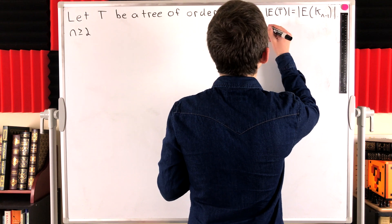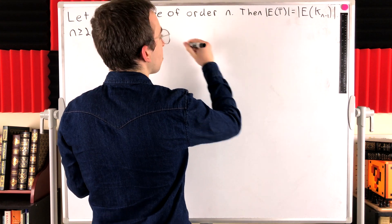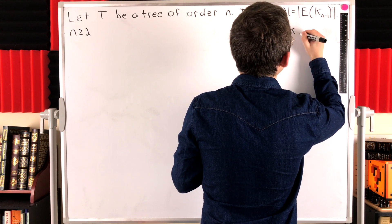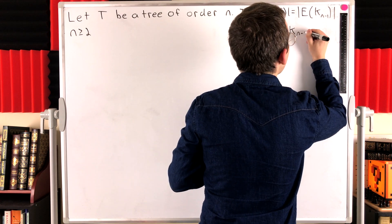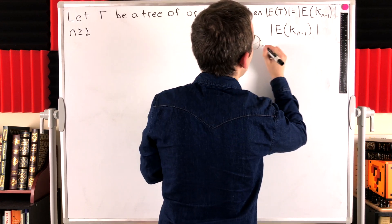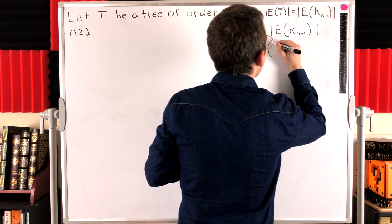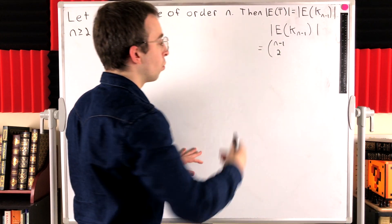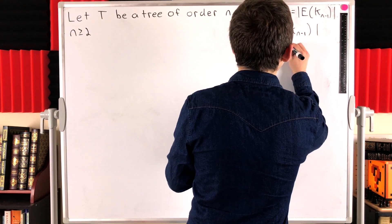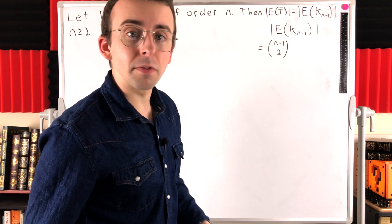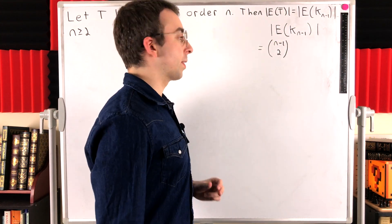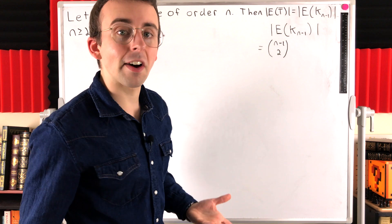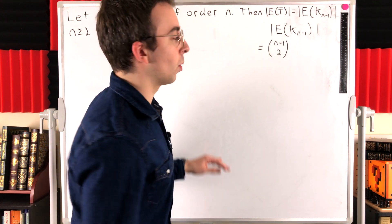If we have a total of n minus one vertices, we're going to write the size — that's the cardinality of the edge set — of a complete graph on n minus one vertices. Well, this complete graph has n minus one total vertices, which means there are n minus one choose two total possible edges. And the complete graph has all of those possible edges, because any way we can pick two vertices defines an edge. So it's n minus one choose two.